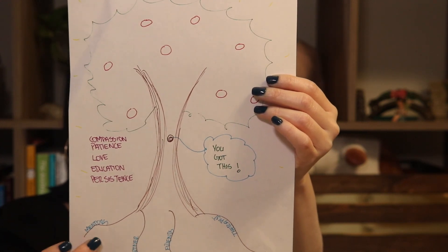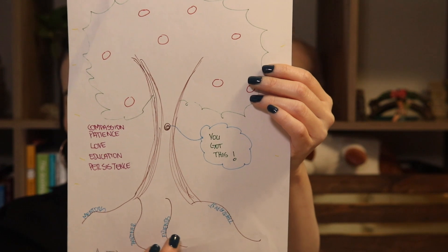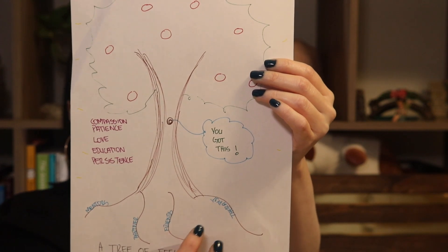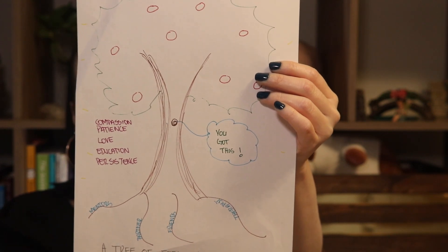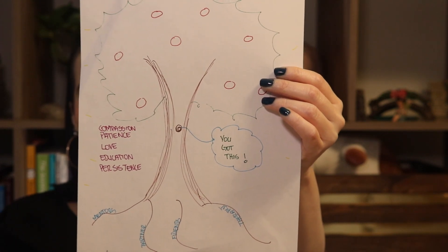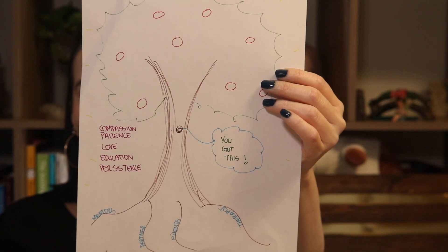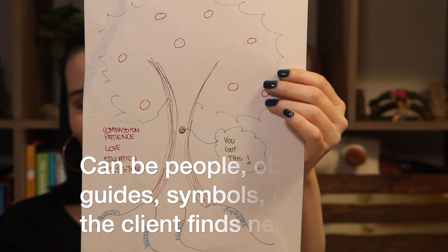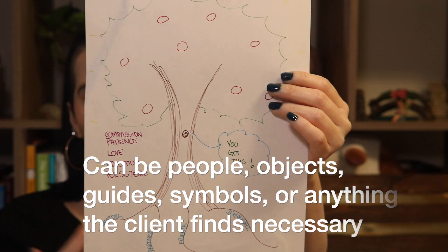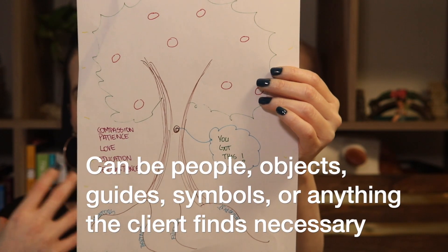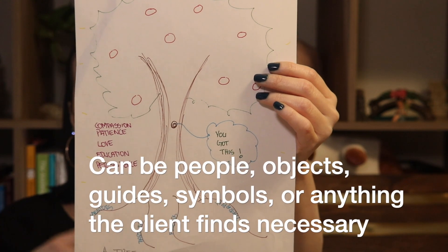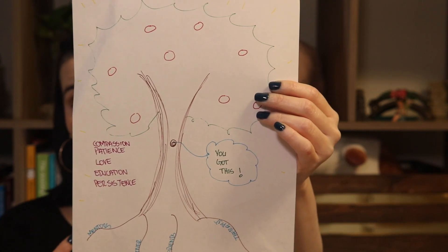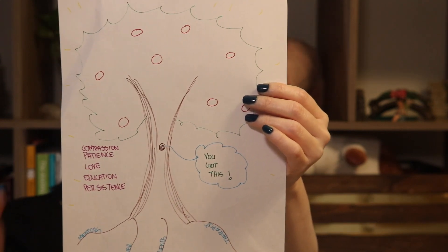At the bottom, my drawing is pretty simple — I have the roots. You want clients to think about what is necessary for survival. For me, that includes things like my mentors, my family, my friends — things that are really important to me.